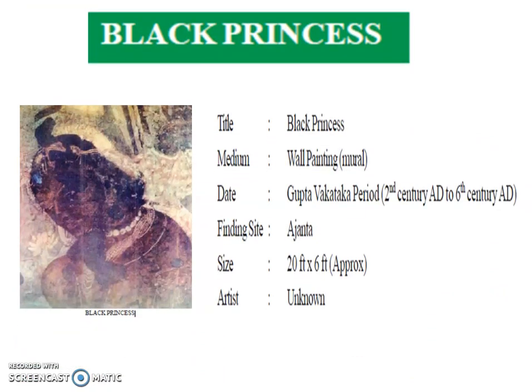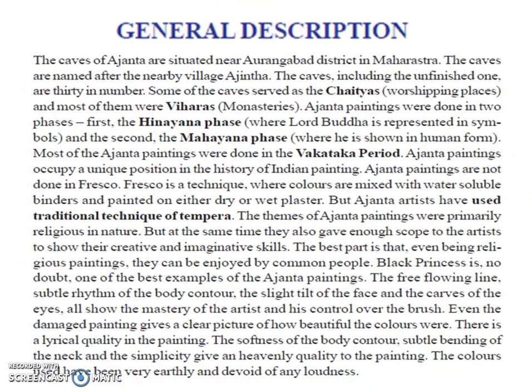Now let's see the Black Princess. This is the famous Black Princess. Title is Black Princess. Medium is wall painting. Date is Gupta-Vakataka period, 2nd century AD to 6th century AD. Finding site is Ajanta. Size is 20 feet by 6 feet. The artists are known. You have to read the detailed description when you have time.